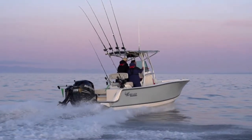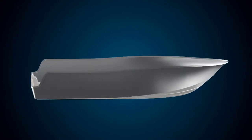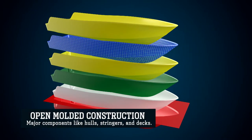Major components of Mako boats like decks, stringers, and hulls are built using a fiberglass construction technique called open molding.